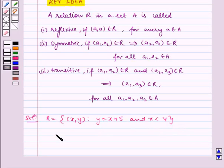So now let us find the elements of R. Therefore, R equals, for x equals 1, y equals 6, so (1, 6). For x equals 2, y equals 7, and for x equals 3, y equals 8. x equals 4 will not be considered since it is given that x is less than 4.